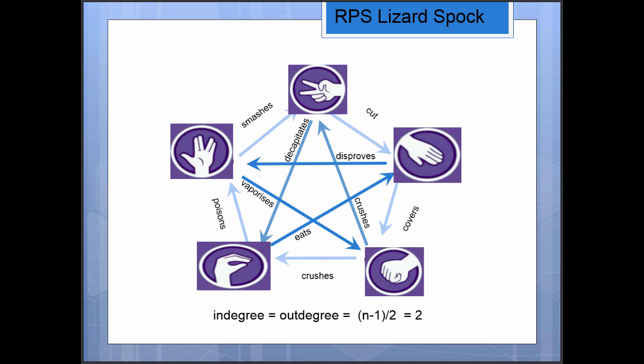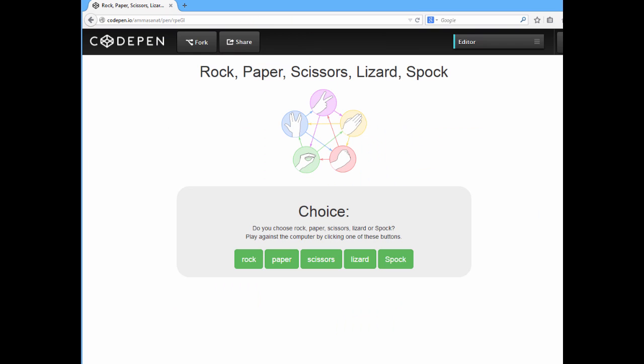In fact, my husband built us a little web app. And it looks something like this. You can find it at CodePen if you want to see the code as well. But this is so that you can play rock, paper, scissors, lizard, Spock without needing a friend on hand.